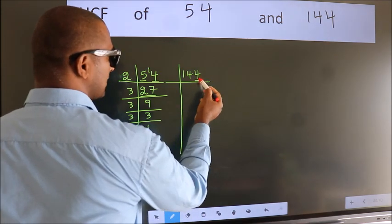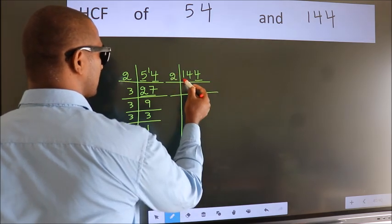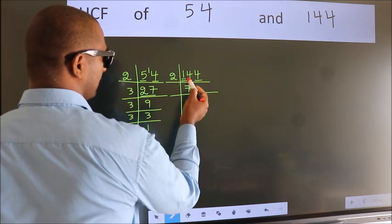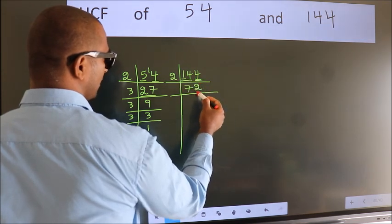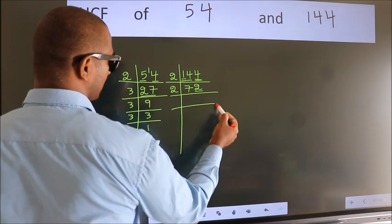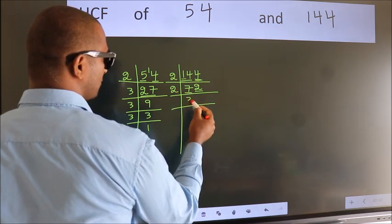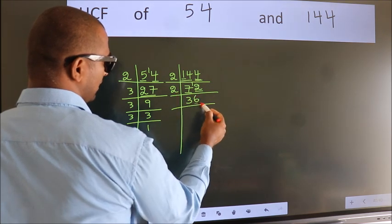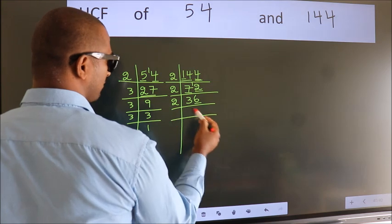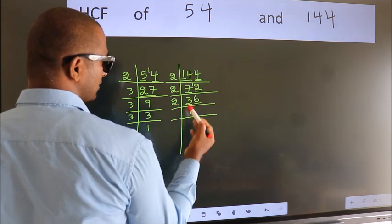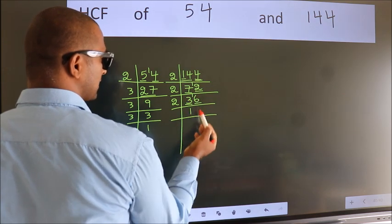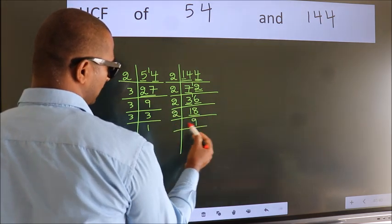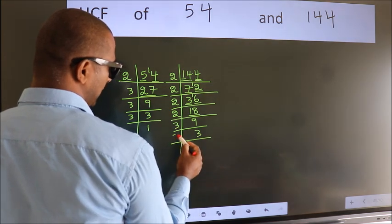For 144: last digit is 4, so take 2. First number is 1, smaller than 2, so take two digits: 14. In the 2 table, 2×7=14. The other number is 4; in the 2 table, 2×2=4. Last digit 2, so take 2. First number 7; close to 7 in the 2 table is 2×3=6. So 7-6=1, carried forward gives 12. In the 2 table, 2×6=12. Last digit 6, so take 2. First number 3; close to 3 in the 2 table is 2×1=2. So 3-2=1, carried forward gives 16. In the 2 table, 2×8=16. Now 18 is 2×9, and 9 is 3×3=9. And 3 is a prime number, so 3×1=3.